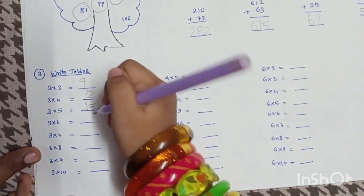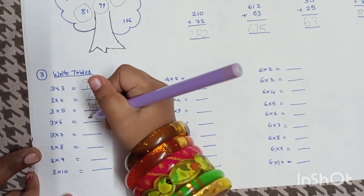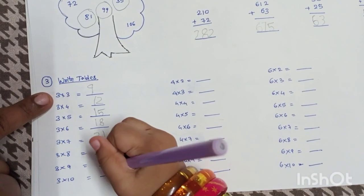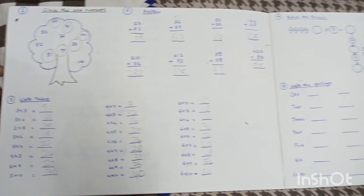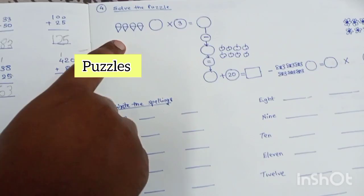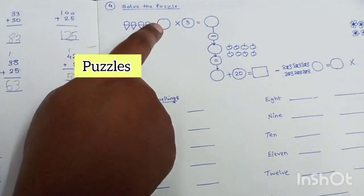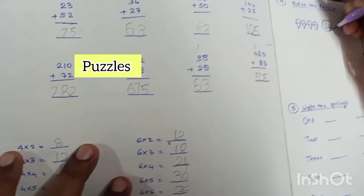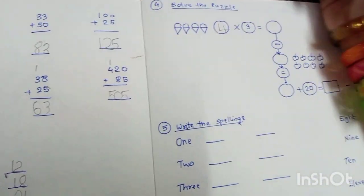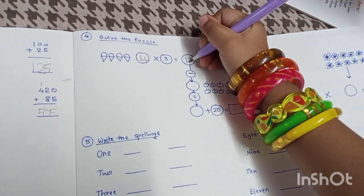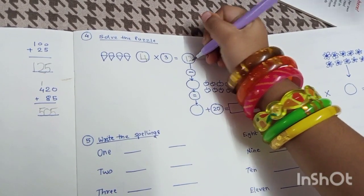3 fours are 12, 3 fives are 15, 3 sixes are 18, 10 tens are 30 — that's easy, everyone knows that. Now let's solve a puzzle. How many ice creams are there? Can you write the number of ice creams over here? What is the question? 4 into 3 — 4 into 3 is 12, right?